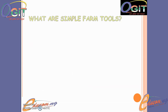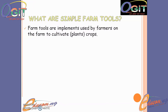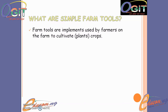Now, what are simple farm tools? Before a student can define the term 'simple farm tool,' he or she should have background knowledge of what farm tools are. Farm tools are defined as implements used by farmers on the farm to cultivate crops. In agriculture, cultivation simply means planting — in other words, farm tools are implements used by farmers to plant crops.